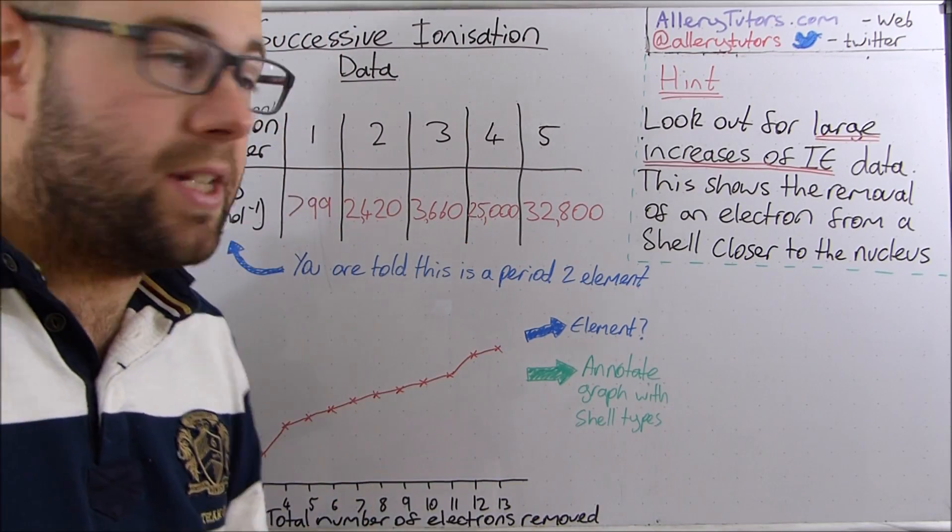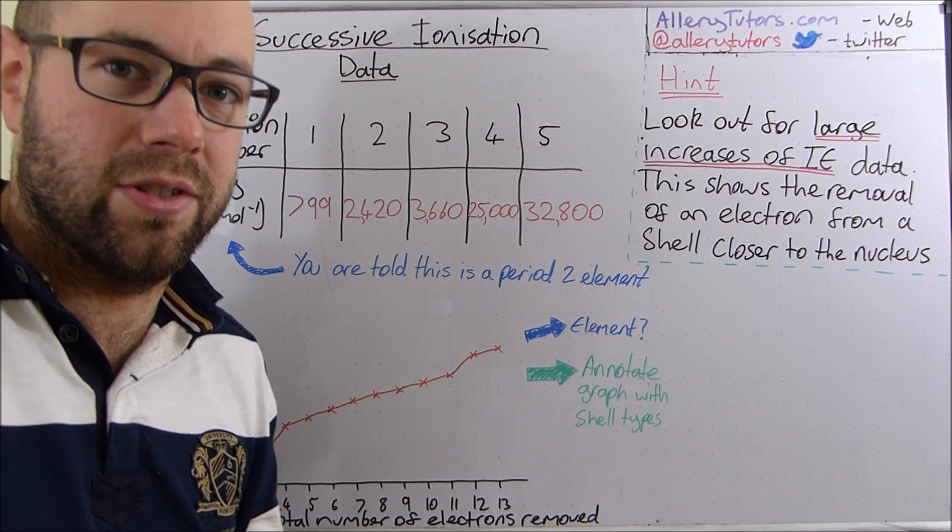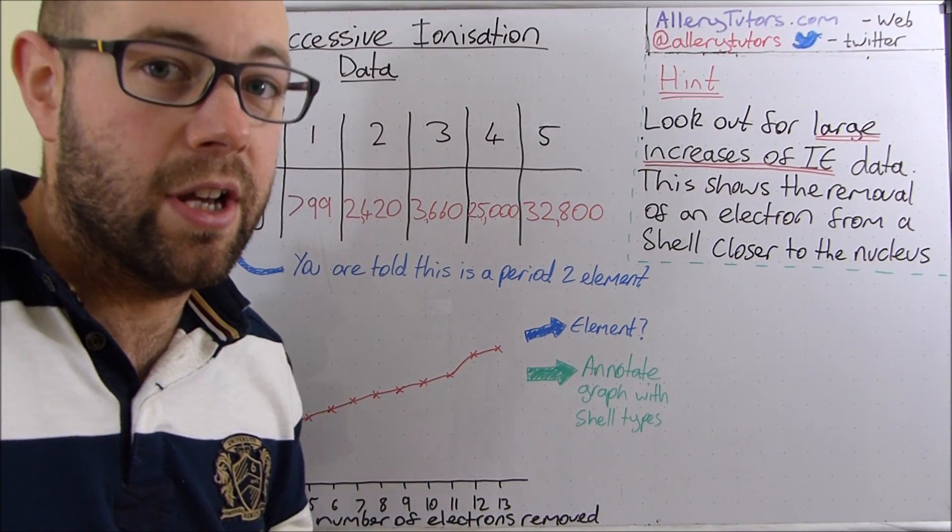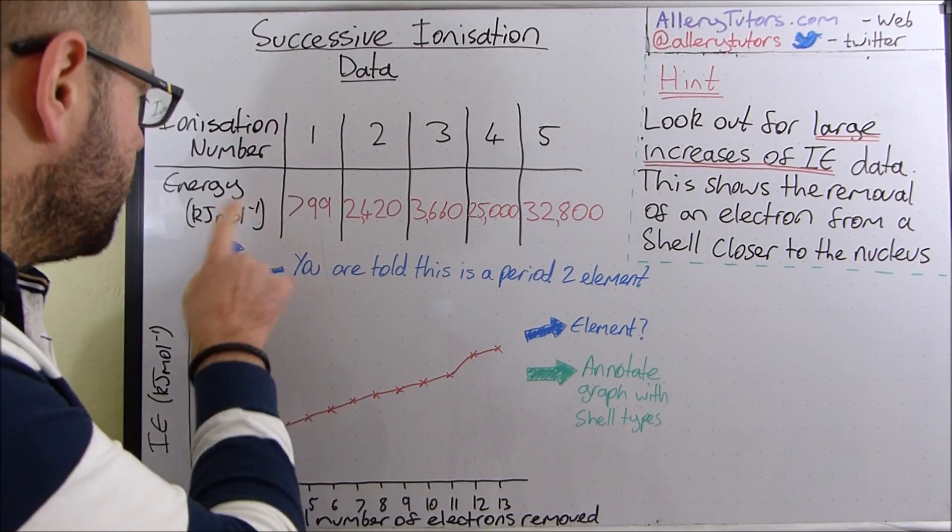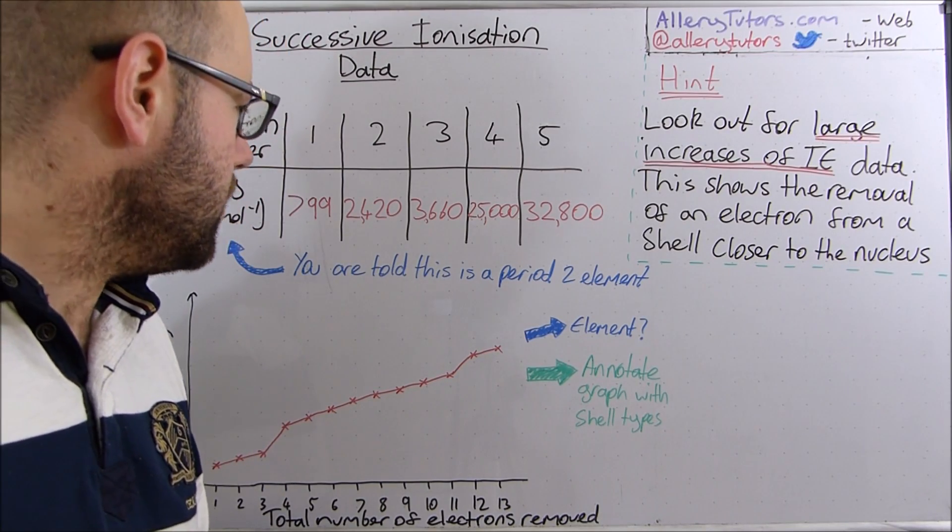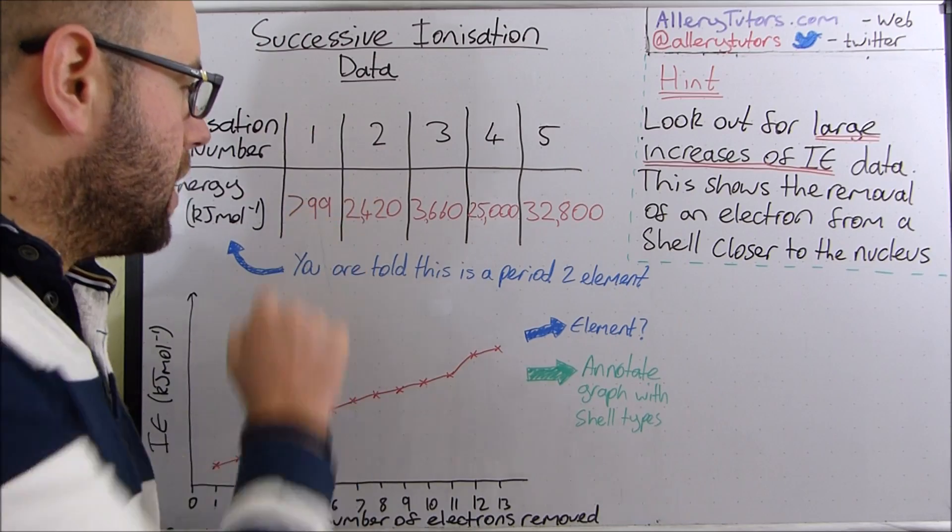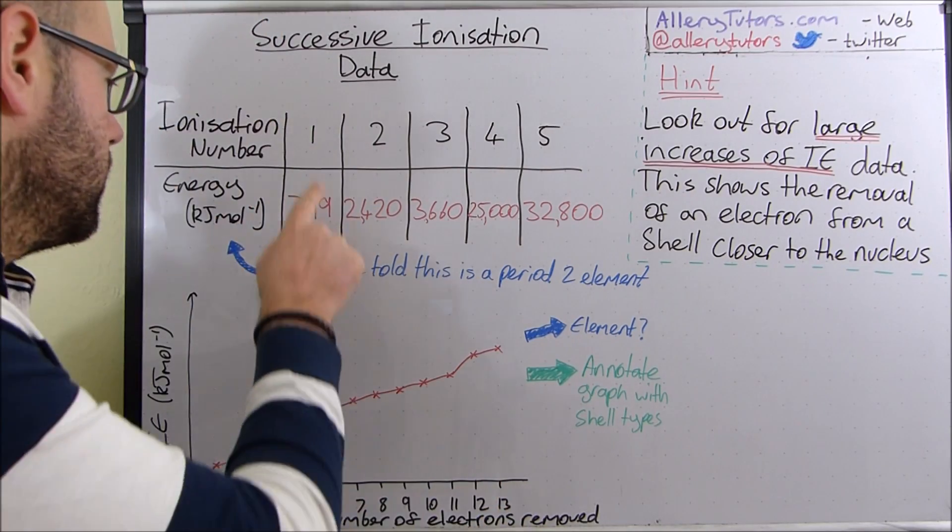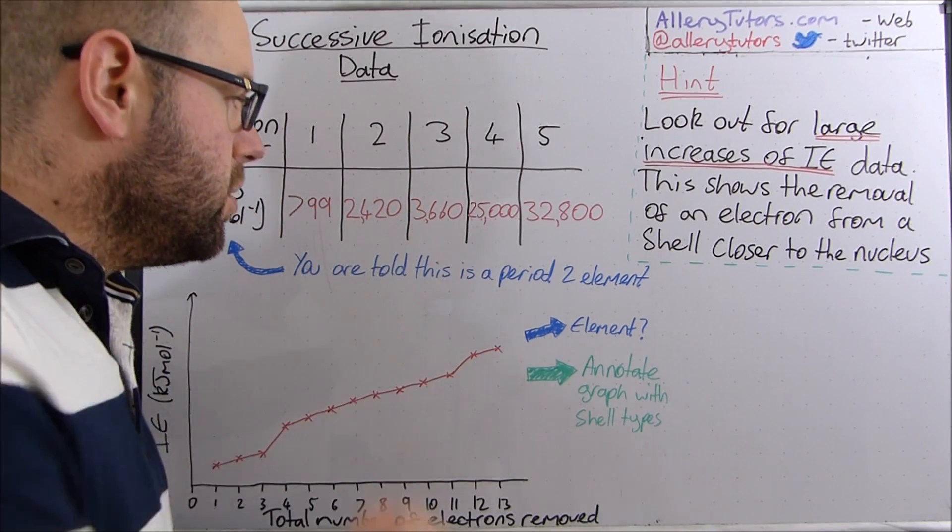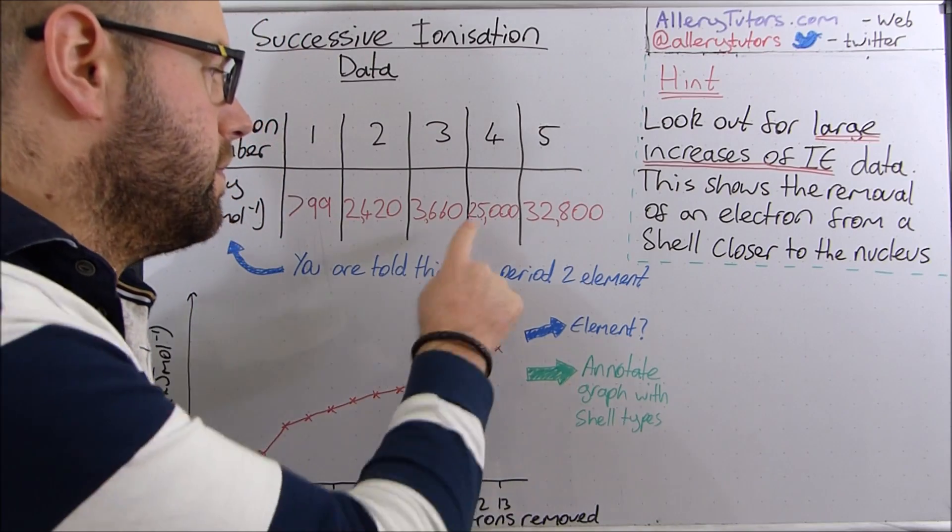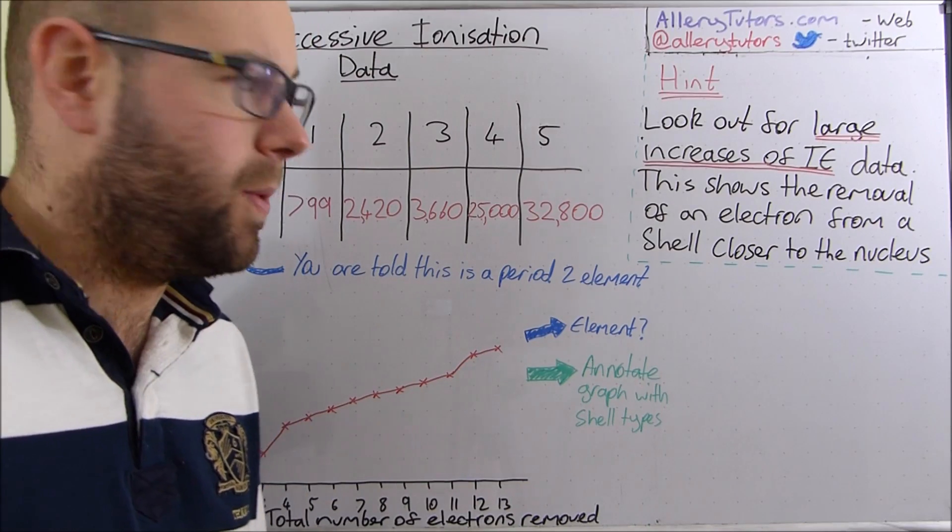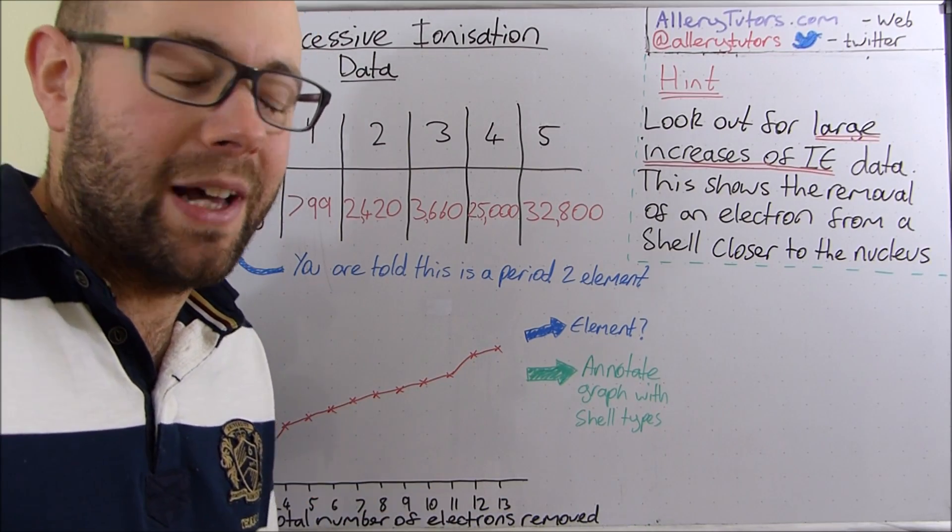So we've got the first set of data here and you can see this is the ionization number, so this is how many electrons we're removing. They've given us the energy of ionization at different values. The first electron takes 799 kilojoules per mole, the second is 2,420, the third is 3,660 and then from the fourth one there's a huge jump. All of a sudden we need a ridiculous amount of energy to remove that fourth electron.